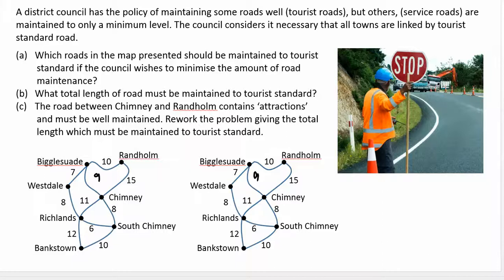In the next case we're asked to try to maintain the minimum distance of roads so people can visit each of these destinations. As you know, you can start at any point and should find the same length. I'm starting at Wester, which is on the left. My shortest distance here is 7 to Biggles Wave.